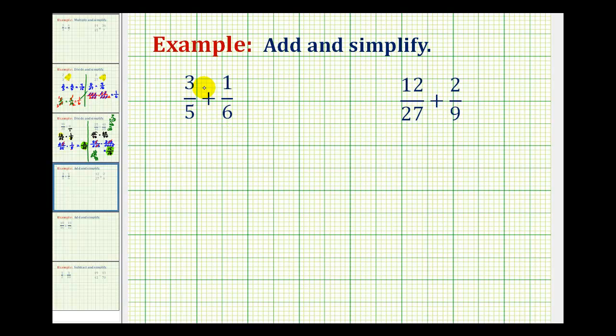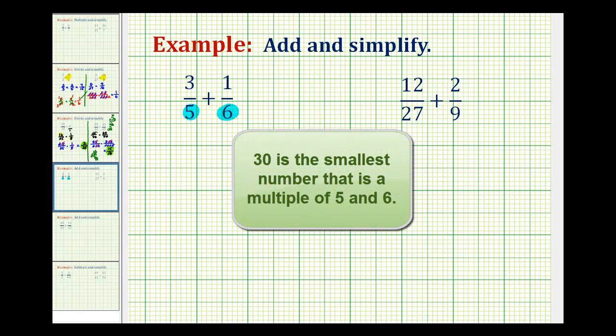So looking at our first example, we have 3 fifths plus 1 sixth. Looking at the denominator of 5 and the denominator of 6, the least common denominator is going to be the least common multiple of 5 and 6, which in this case would be 30.